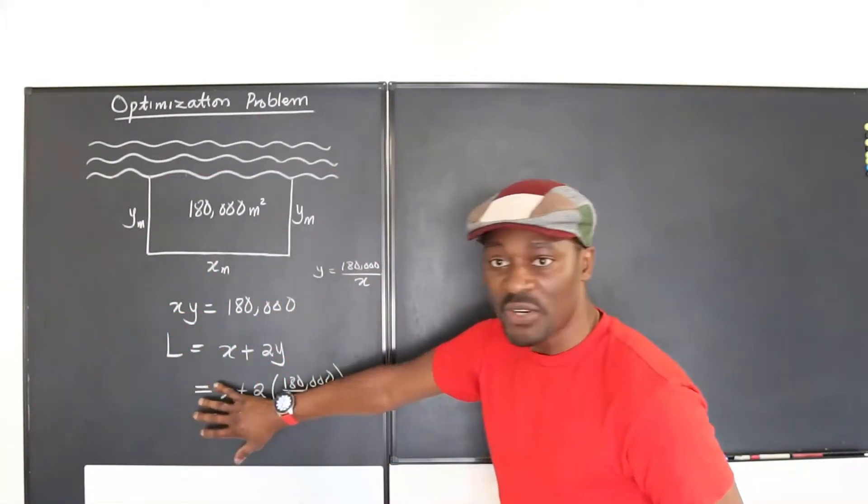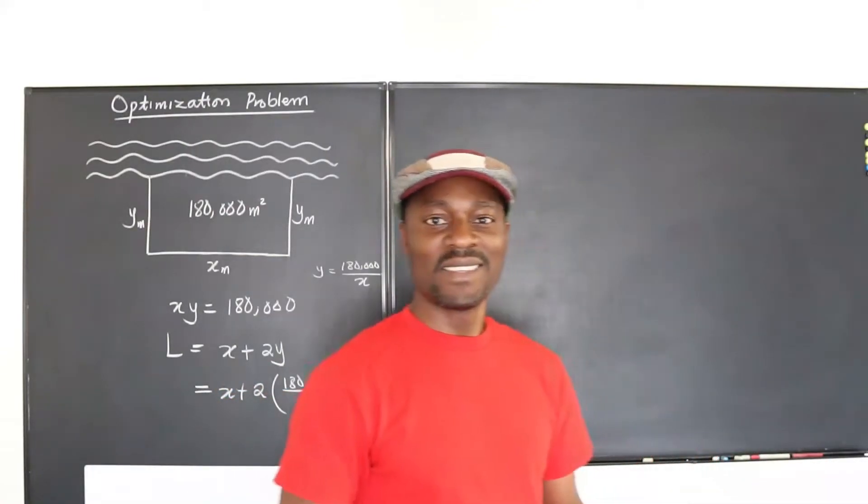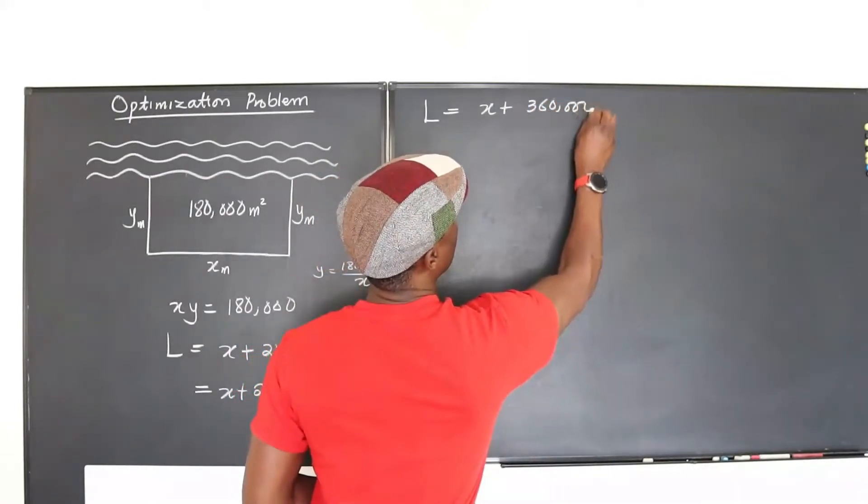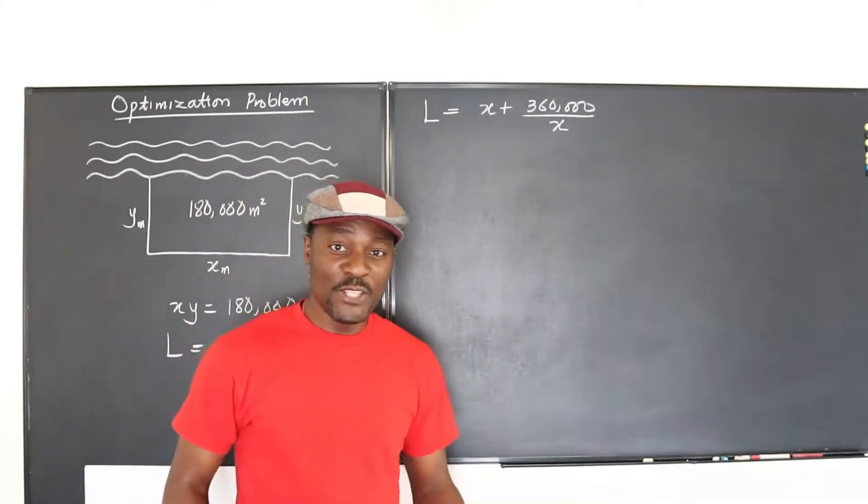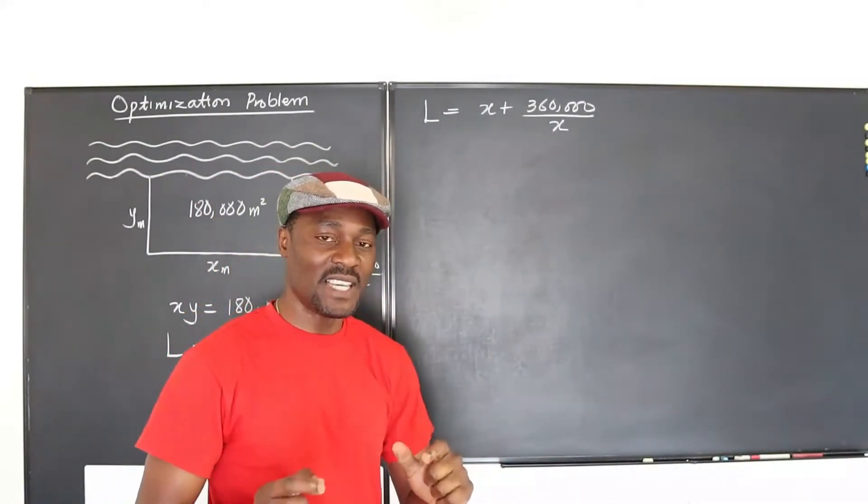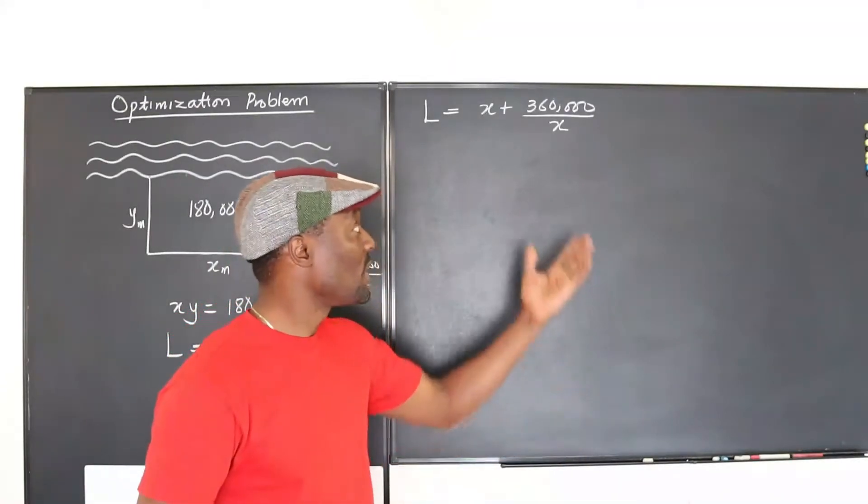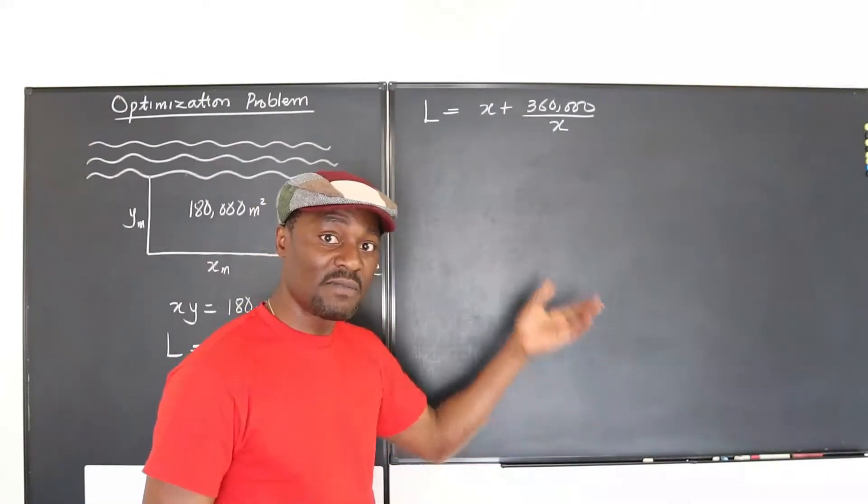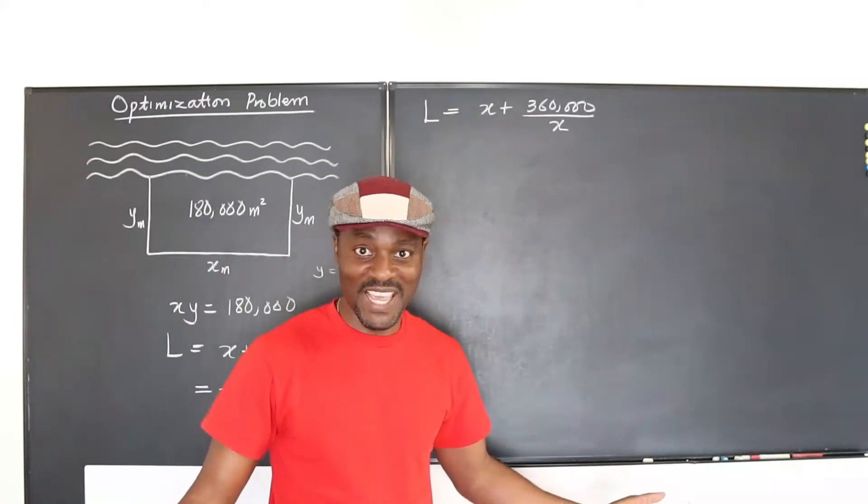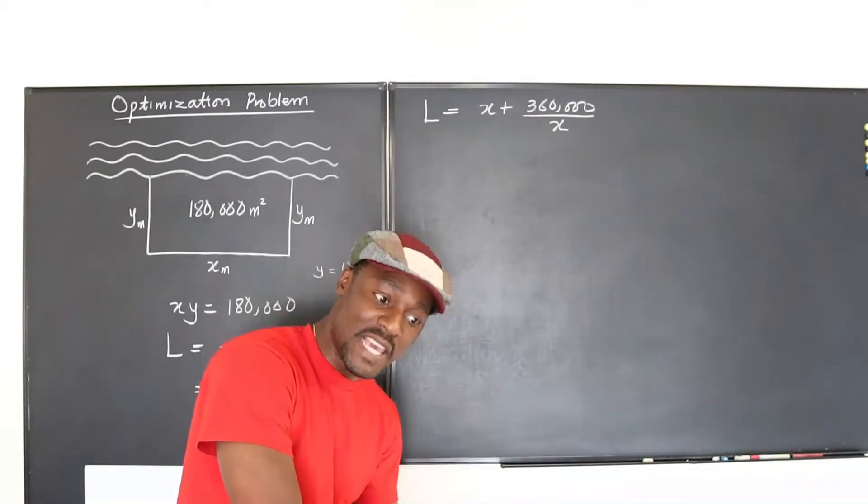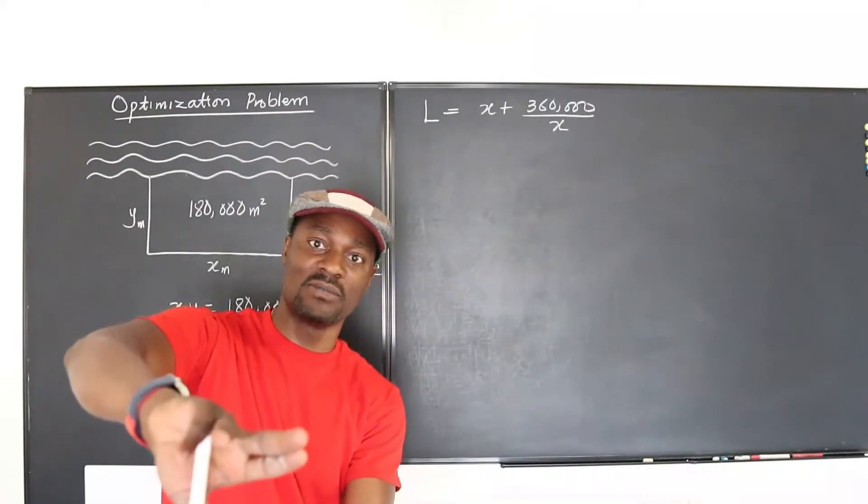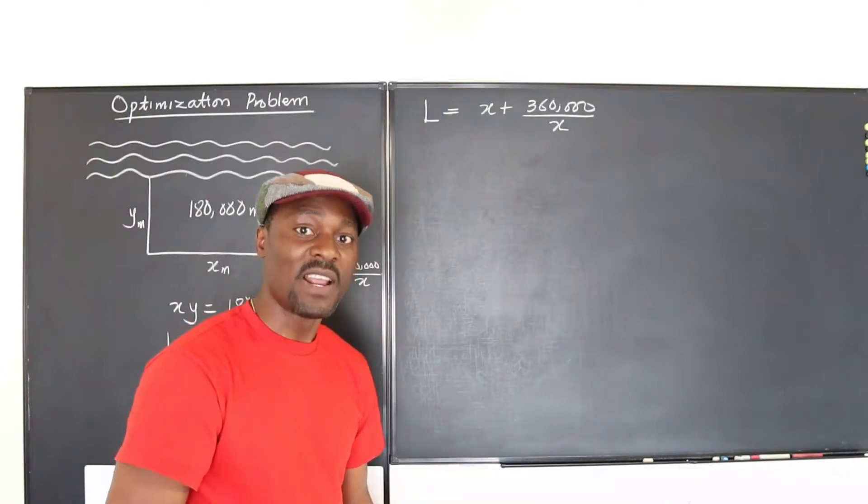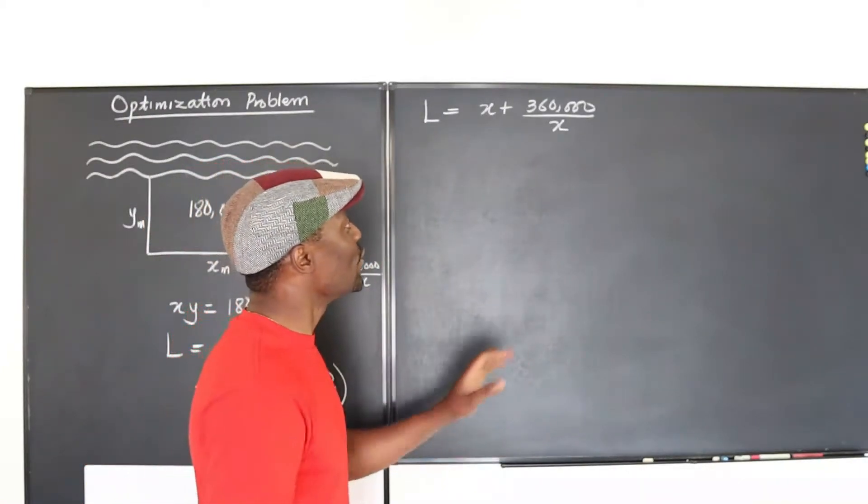Now this is the expression that we need to simplify and then minimize. What we need to do next is to differentiate this. Remember, we're counting on this idea that at the maximum or the minimum point—well, we expect to have a minimum here—at the minimum point of this function, the rate of change dL/dx, or the derivative of this function, will be equal to zero. That's the point of calculus.